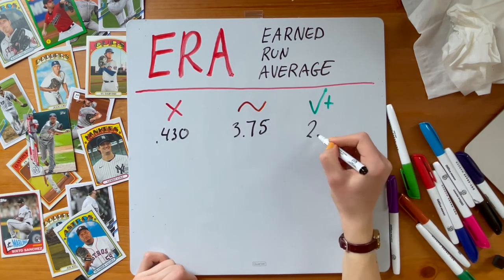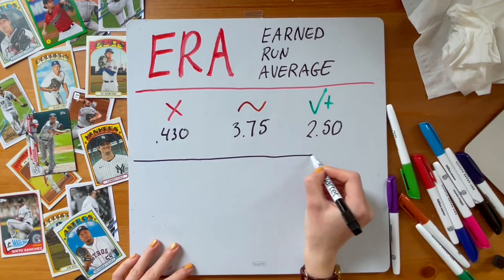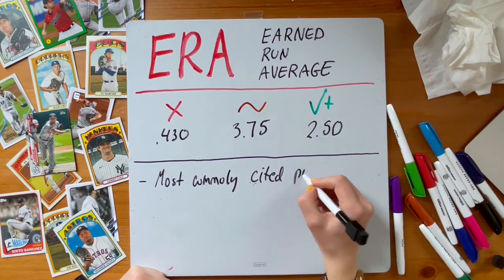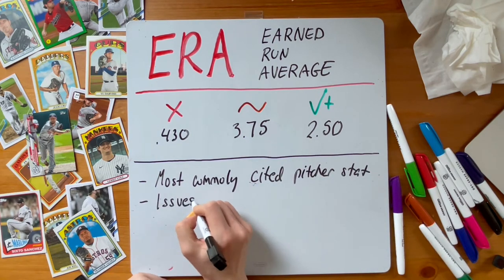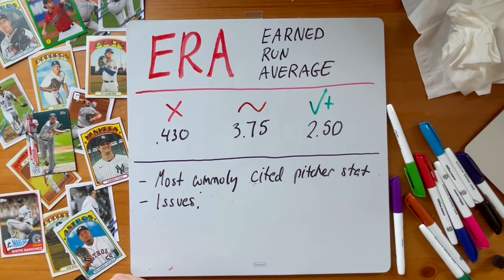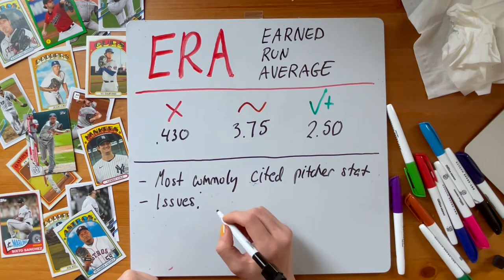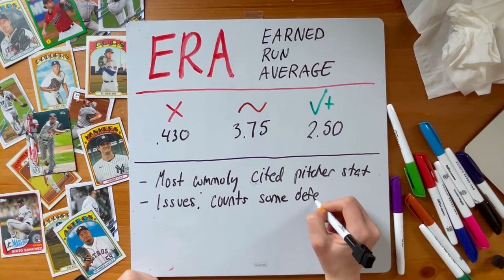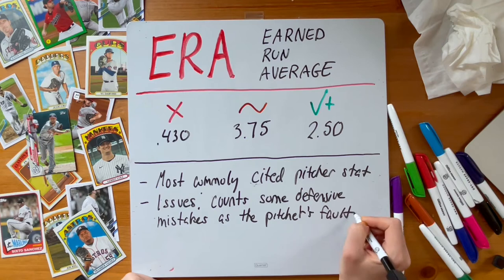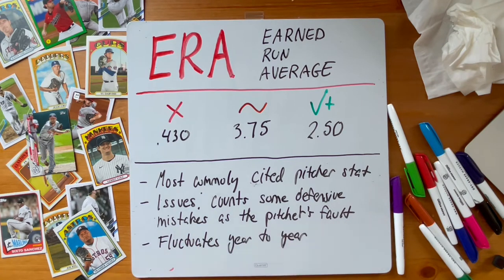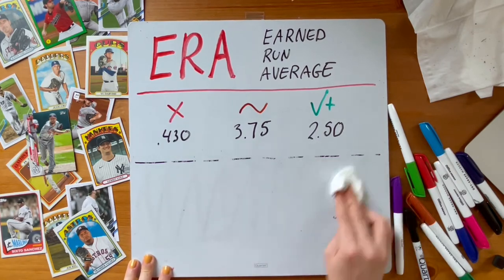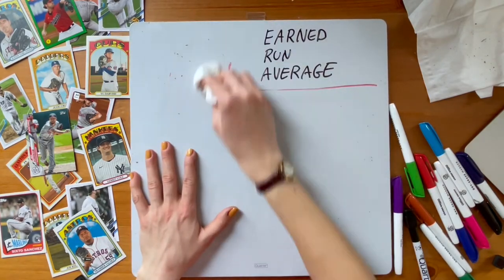ERA is basic and flawed because of how earned runs are determined. In many cases, runs charged to the pitcher are often actually the result of the defense, because of the inconsistent way that errors are assigned by official scorers and the specific definition of what is and isn't an error. ERA only strips out what is judged to be an error by the defense. Yet, for example, a fielder might trip before making a routine fly ball catch, and that isn't considered an error. But ERA would still count any scored runs from this play as the pitcher's fault, so you can see the issue.